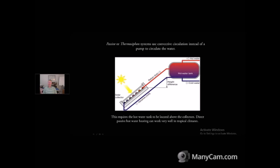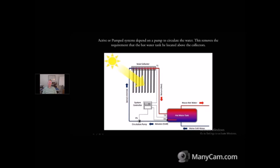You'll probably produce more hot water than you really need year-round. They're fairly inexpensive because it's just not that hard to build. You can kind of do it yourself if you're handy that way. Now an active or pump system is going to depend upon a pump to circulate the water, and that does remove the requirement that the hot water tank be located above the collectors.